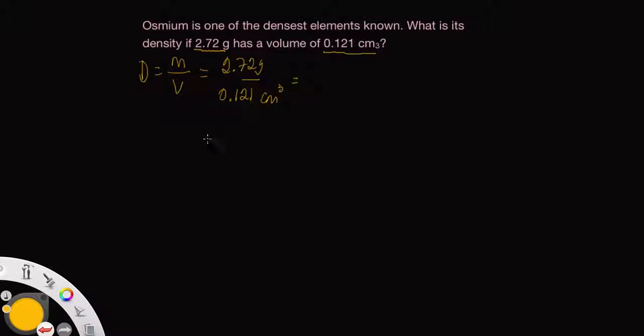Let's punch that in on our calculator and what we get is 22.47933884. So we need to round this off to the correct number of sig figs.